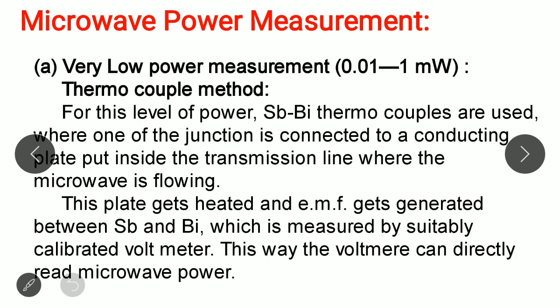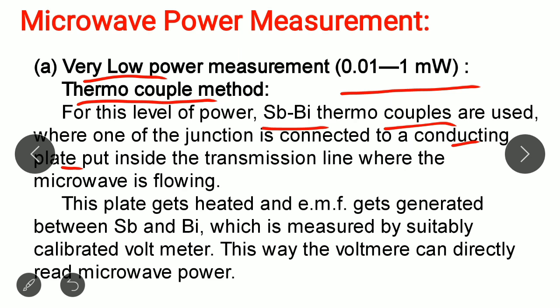Very low power measurement covers the range 0.01 to 1 mW, and for this a thermocouple method is used. For this level of power, Sb-Bi thermocouples are used, where one junction is connected to a conducting plate placed inside a transmission line where microwave is flowing. This plate gets heated and an EMF is generated between Sb and Bi, which is measured by a calibrated voltmeter that can directly read the microwave power.